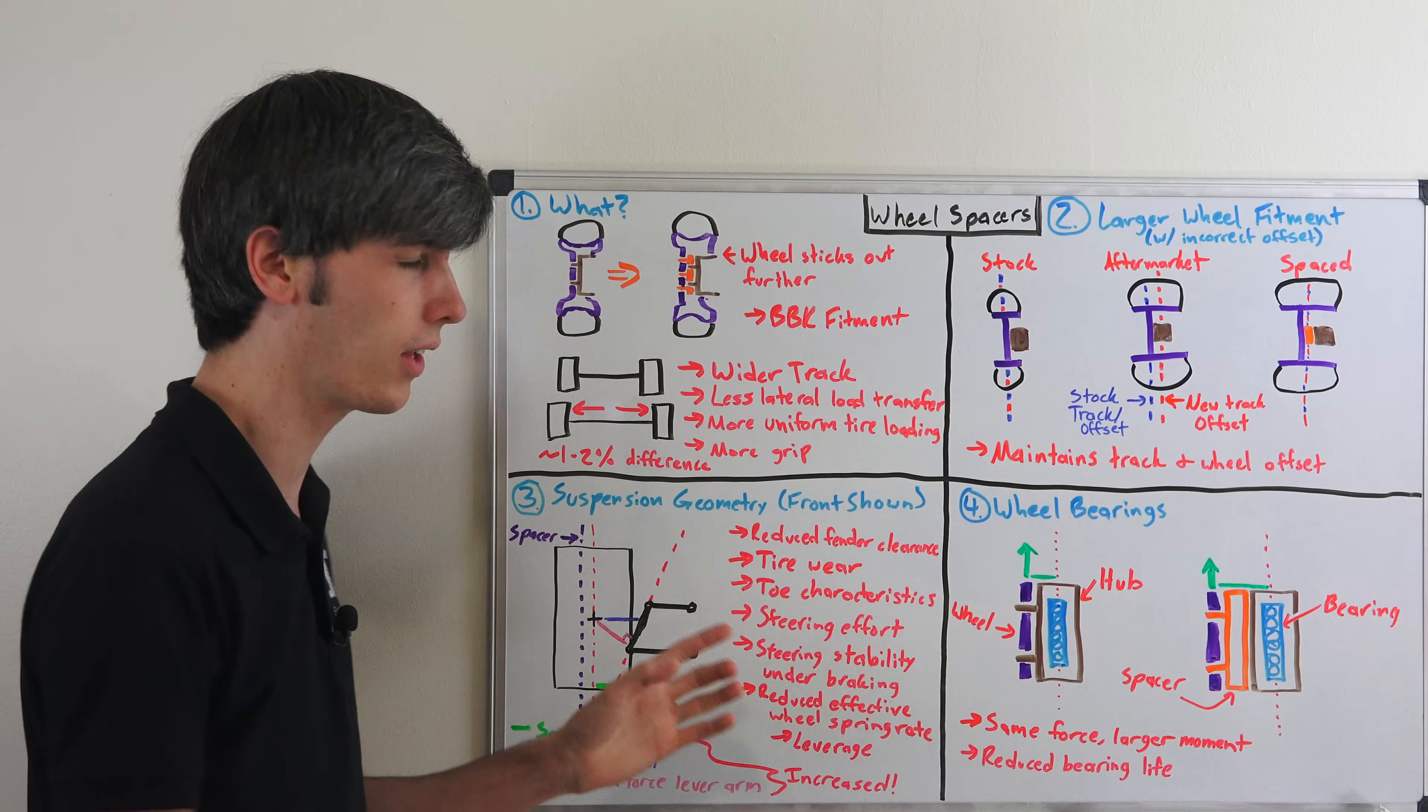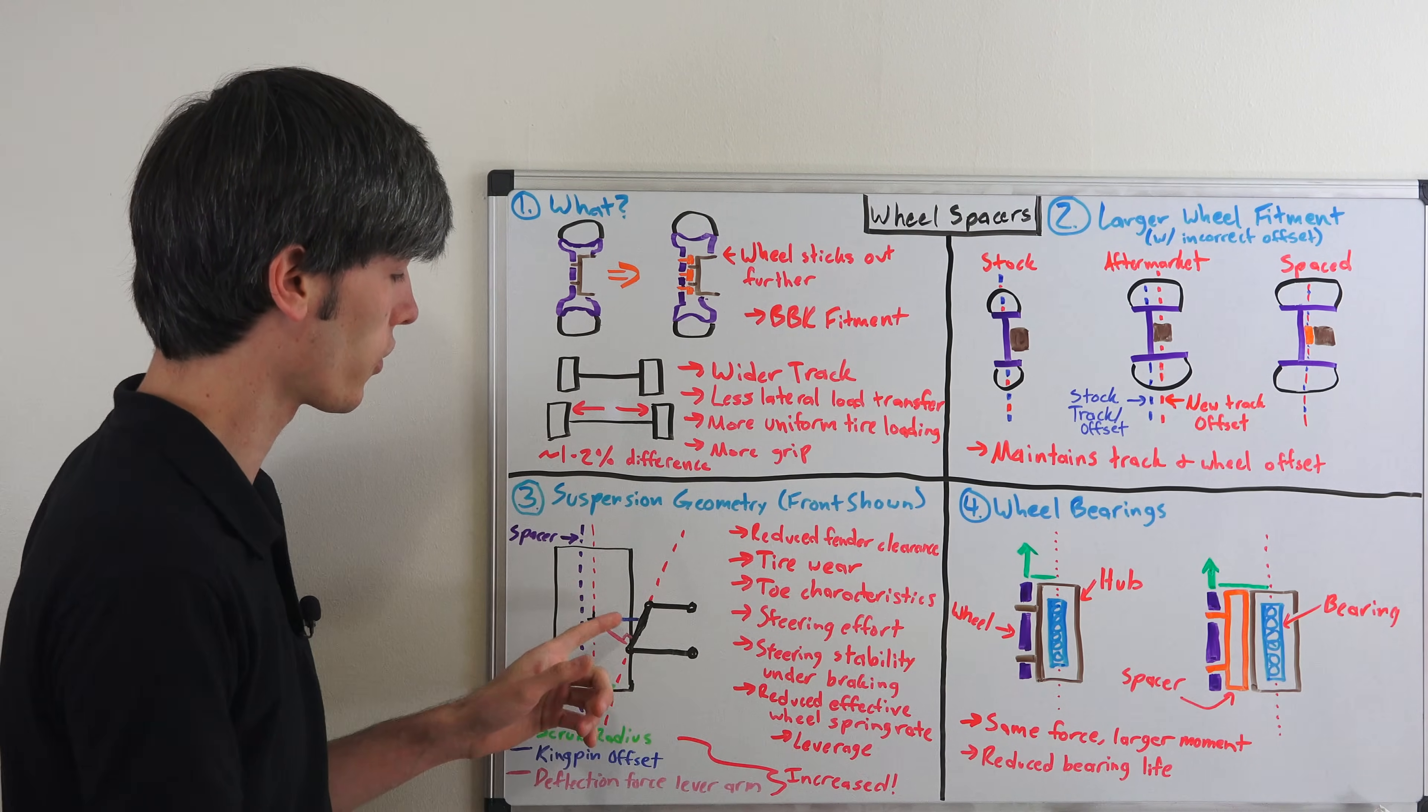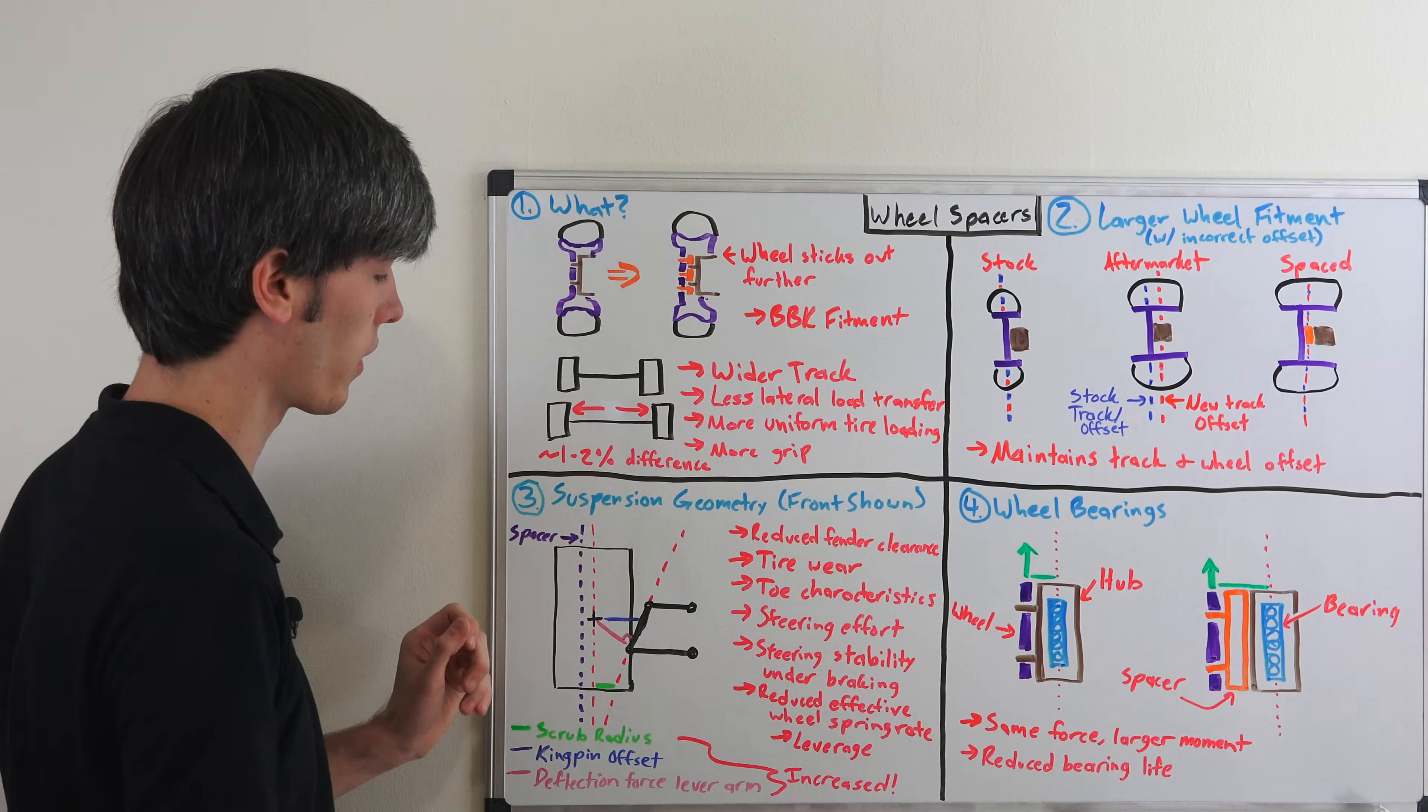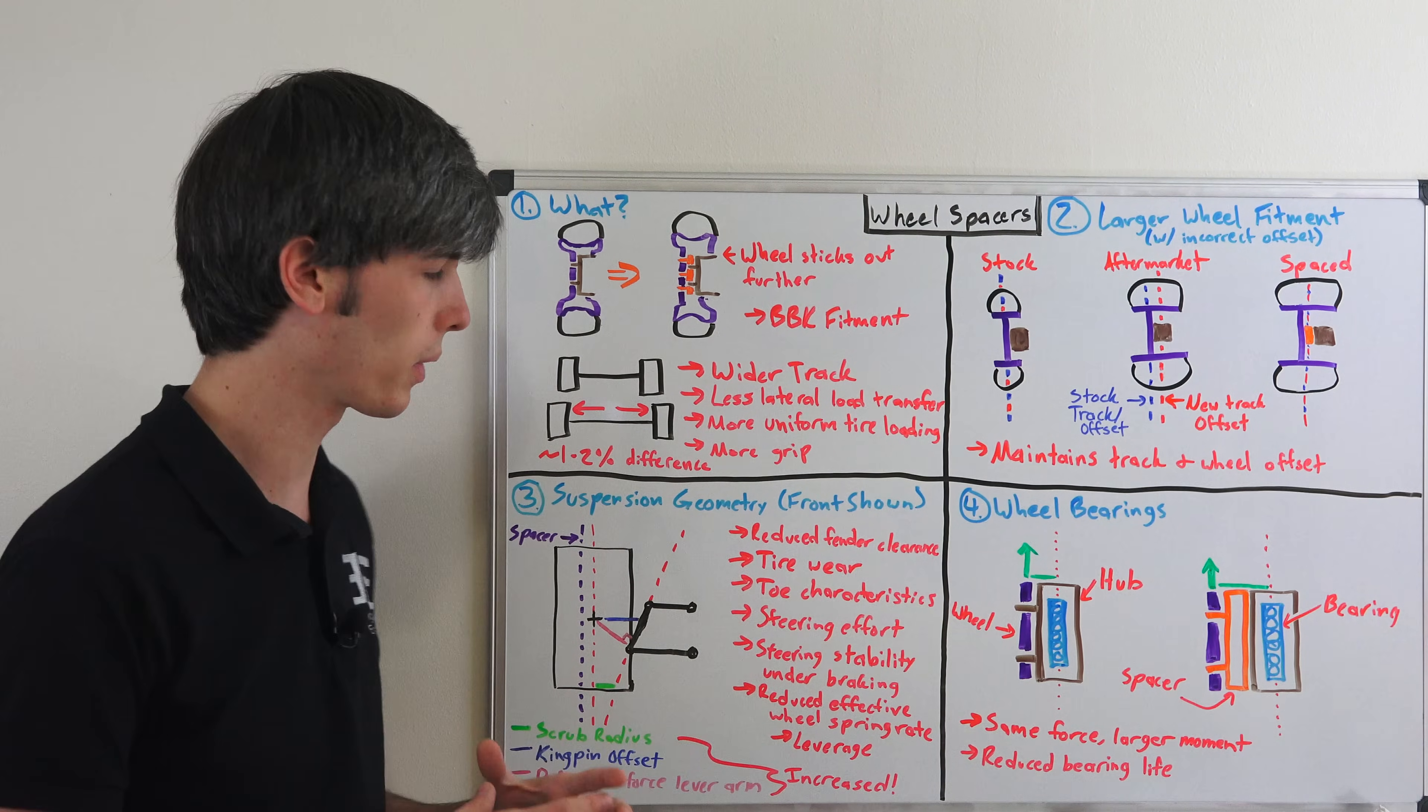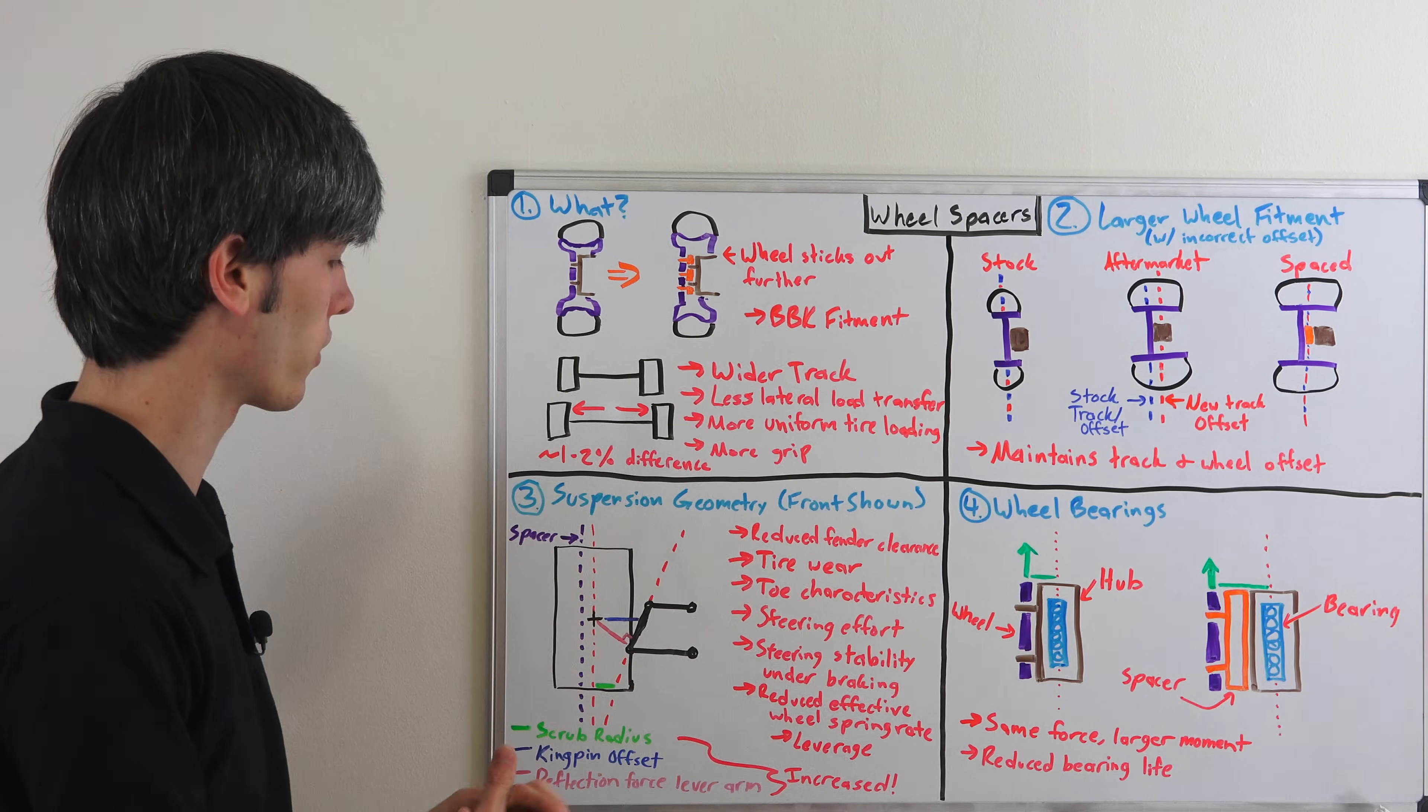So not the spring rate itself, that won't change. But the effective spring rate at the wheels changes based on suspension geometry. And by offsetting it, you're adding leverage to that wheel. And so you're going to be reducing the overall effective spring rate of your suspension. And so that's another drawback of doing that.